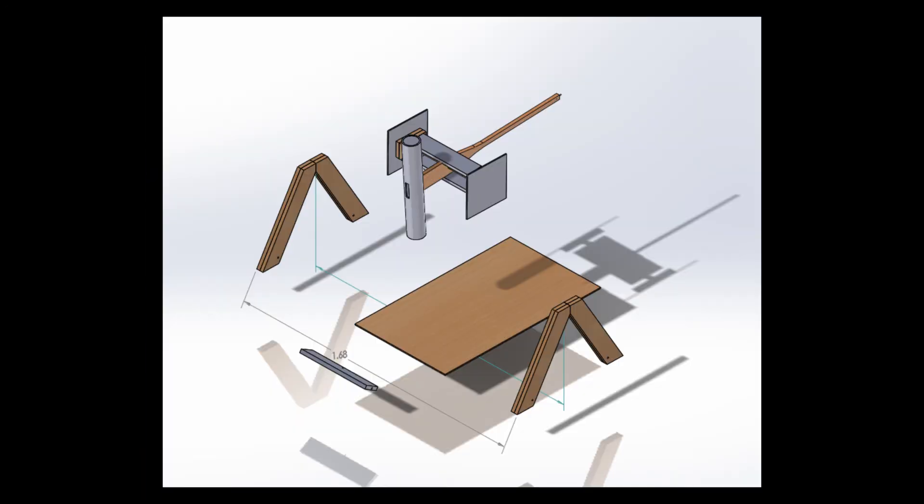The trebuchet can be broken into three main parts: the firing arm, including the weight, the release mechanism and the supporting features.